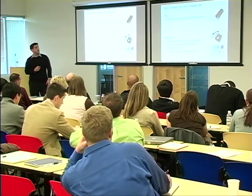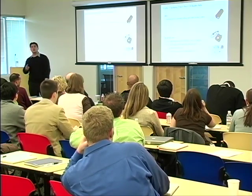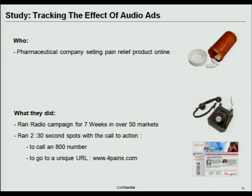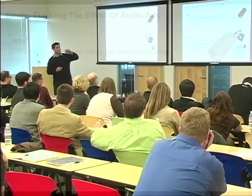The second study we did was with our Google audio platform — and you can do this with any audio platform. A pharmaceutical company was selling a pain medicine, and they ran a radio campaign in over 50 markets for about seven weeks. They had two different airtime spots with different calls to action: one was to call an 800 number, and the other was to go to a unique URL — 4painx.com.